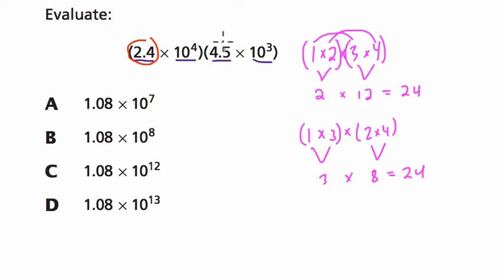I'm going to multiply 2.4 and 4.5, the two numbers not written as powers of 10. 2.4 times 4.5. And I'm also going to multiply the powers of 10, 10 to the 4th times 10 to the 3rd.